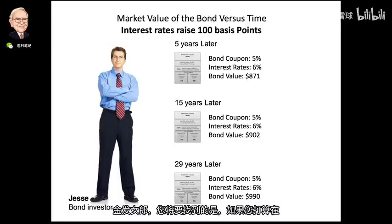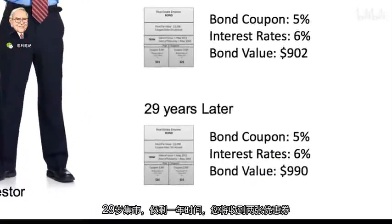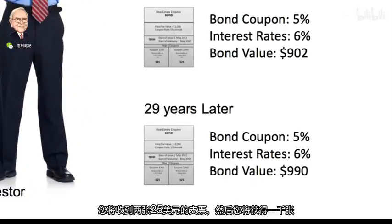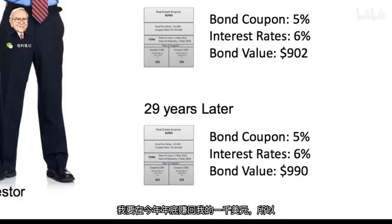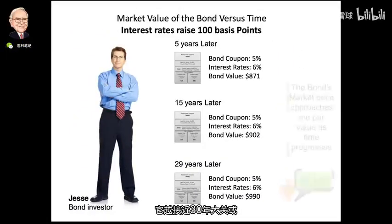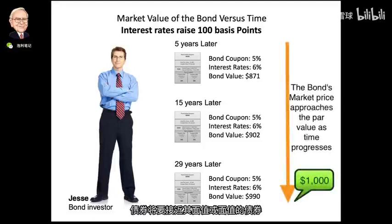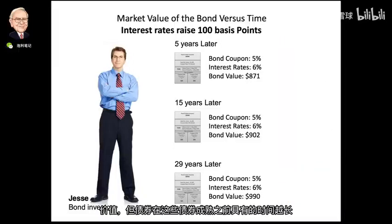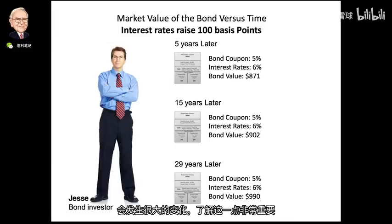If you're going to buy that bond at the 29-year mark with only one year left, you'd receive two $25 checks and then get $1,000 back. What you'll find is that the longer you hold the bond and the closer it approaches maturity, the bond value approaches its par value or face value. But the longer the bond has before it matures and the more interest rates change, the market value on the bond is going to drastically change. That's really important to understand if you're buying long-term bonds.